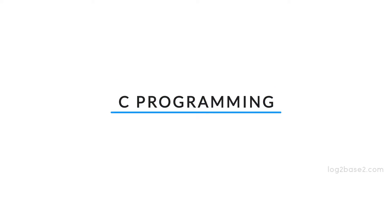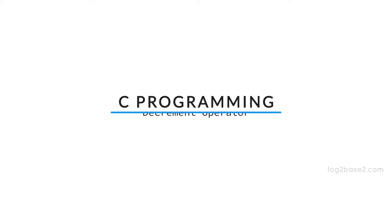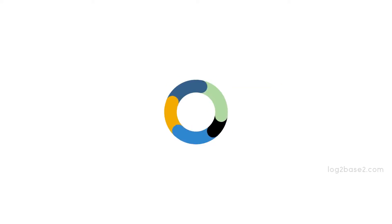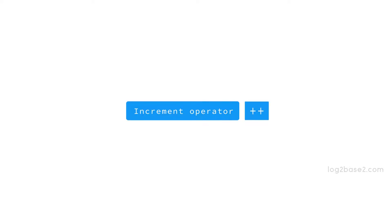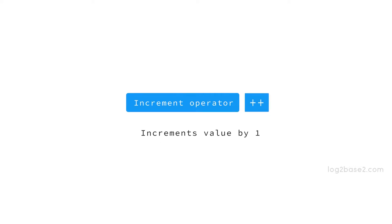Hi friends, in this video we are going to discuss about the increment and decrement operator in C. First, let us discuss about the increment operator plus plus. The operation performed is that the value will be incremented by 1.